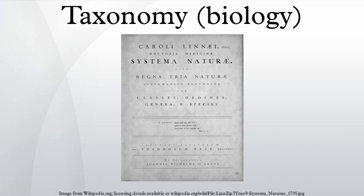As points of reference, recent definitions of taxonomy are presented below: theory and practice of grouping individuals into species, arranging species into larger groups, and giving those groups names, thus producing a classification; a field of science that encompasses description, identification, nomenclature, and classification; the science of classification — in biology, the arrangement of organisms into a classification.